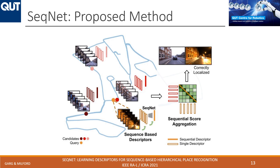Here is an overview of our proposed method. Given a database of daytime images represented by sequences of five images per place, each with one descriptor per image, we use SeqNet to create a single sequential descriptor from a sequence of five images. Once this sequential descriptor is obtained, it is used to find the top matching candidates from the reference database. These top candidates are then refined using single-image-based sequence score aggregation to find the final correct match.